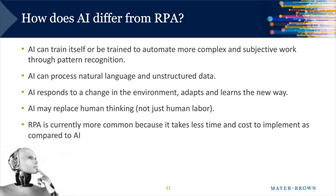How is AI different from RPA? Unlike RPA, which follows its rules in the same way over time, an AI system trains itself — or can be trained — to automate more complex and subjective work through pattern recognition. IBM Deep Blue can learn to be the world's chess champion, and IBM Watson can become the world's Jeopardy champion. RPA requires things that are definable, repeatable, and rules-based, while AI can process natural language, unstructured data, and variable inputs — a big advantage when dealing with big data from a variety of sources in different formats.